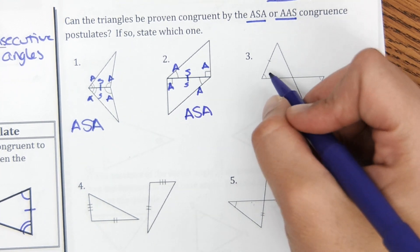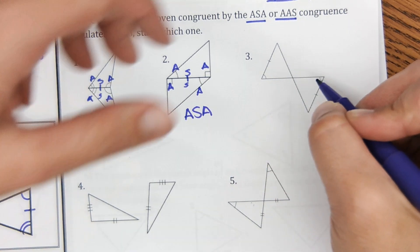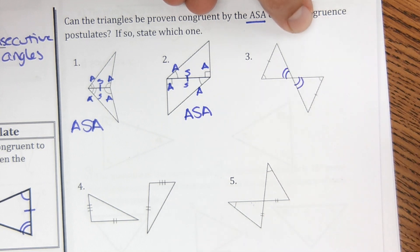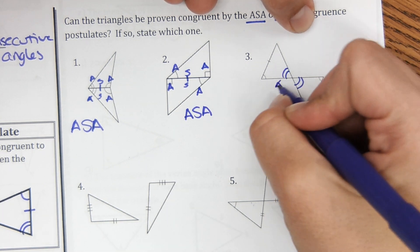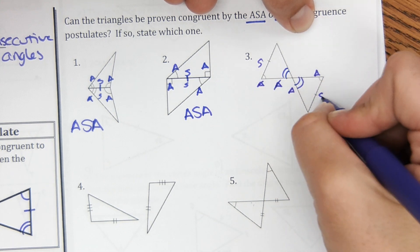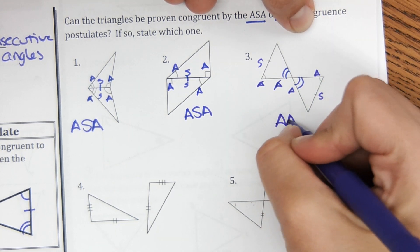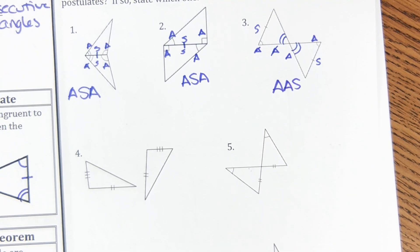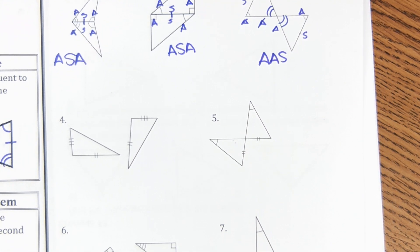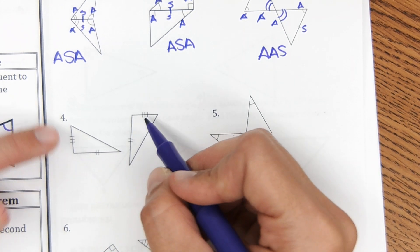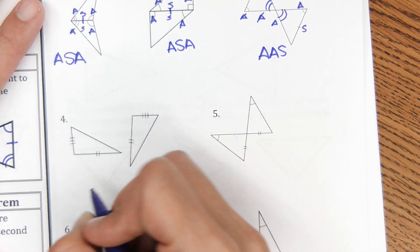For number three, it shows a side and an angle, and the vertical angles are equal too — so you can prove vertical angles are equal. That gives you angle-angle-side matching AAS. For number four, it shows two sides in common but doesn't give enough information, so this would be none.